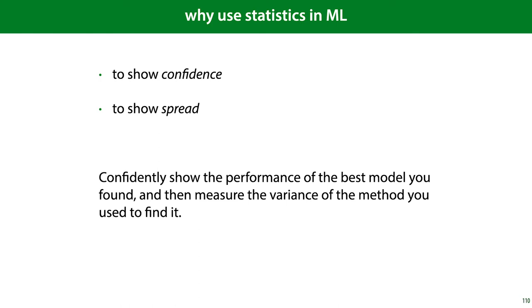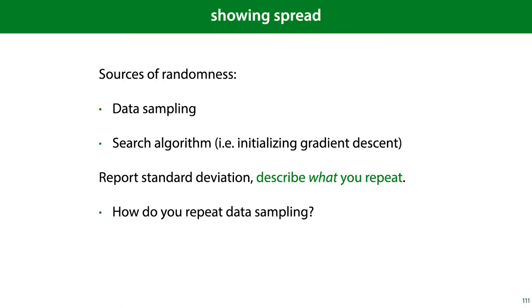For this purpose, I want to show the spread in different measured values. To show spread, it's important to think about which sources of randomness there are in your data. One is the method used to sample the data. If we sample new data, we get slightly different results. This is not usually something we can repeat.